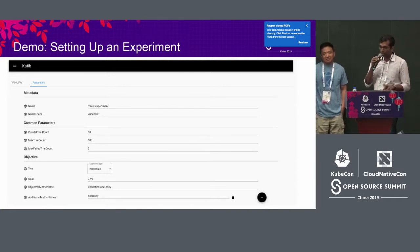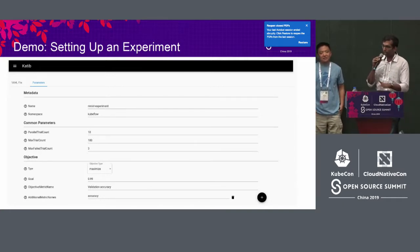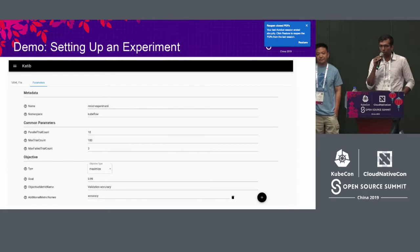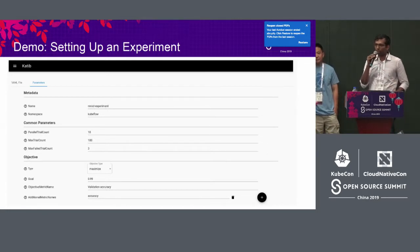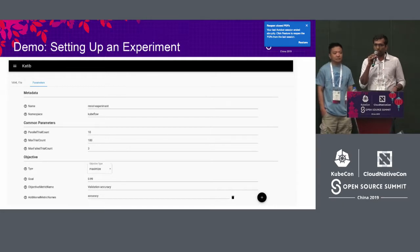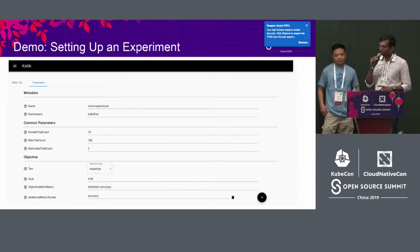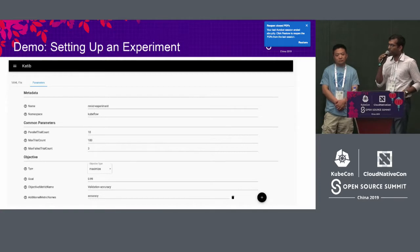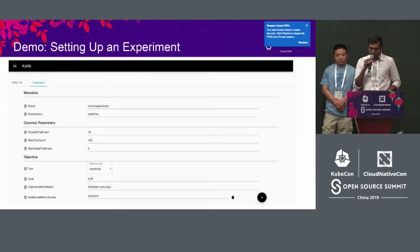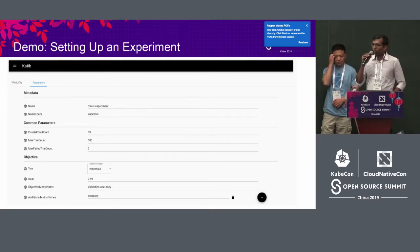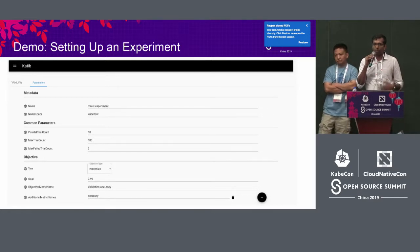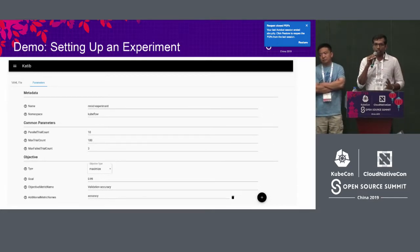Due to network issues we're not showing the demo live, but Katib has a UI which provides many features as a user interface. For more customizable options, it's better to use the command line at this point, though we are continuously refining the UI. From the user's point of view, what you have to do is set the experiment config — the rest is taken care of by the Katib controller.